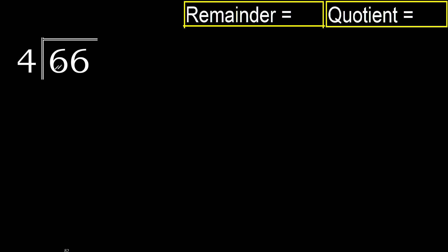66 divided by 4. 6 is not less, so with 6: 4 multiplied by which number is nearest to 6 but not greater? 4 multiplied by 2 is 8 — that is greater. 4 multiplied by 1 is 4 — not greater. So 6 minus 4 is 2.